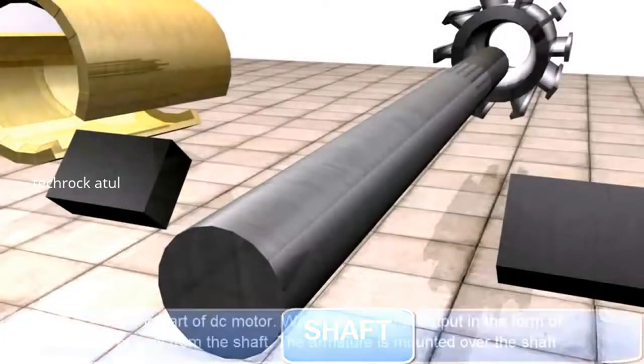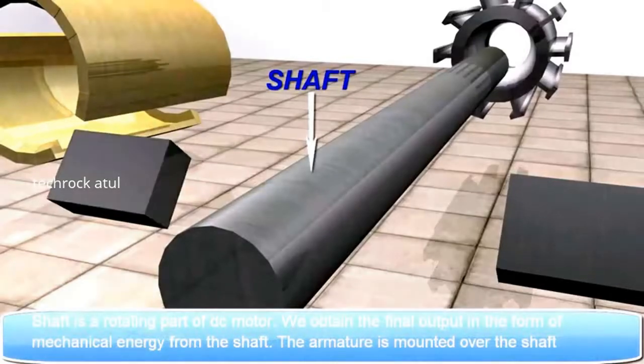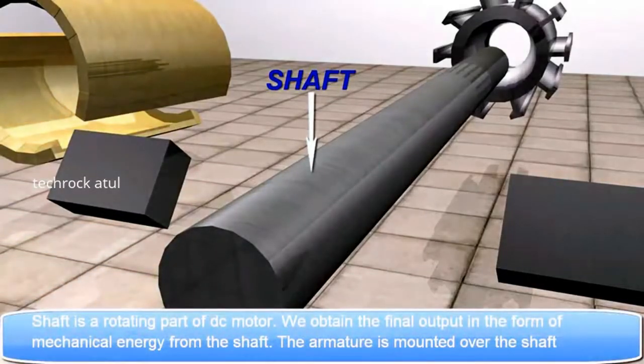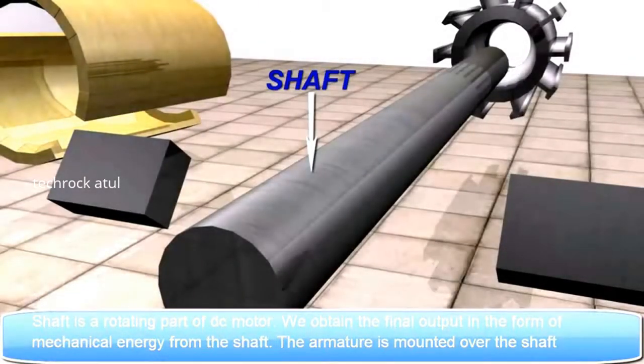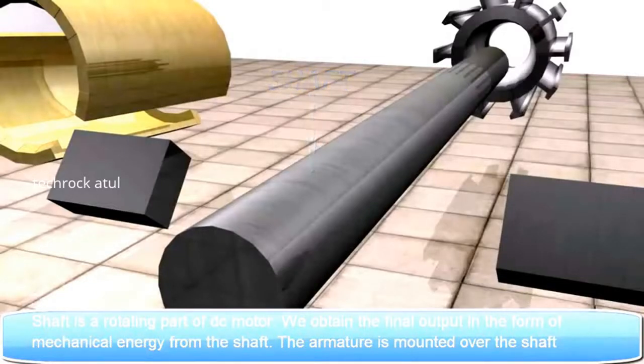Shaft. Shaft is a rotating part of DC motor. We obtain the final output in the form of mechanical energy from the shaft. The armature is mounted over the shaft.